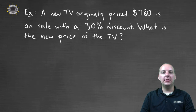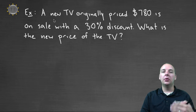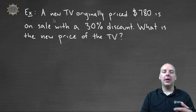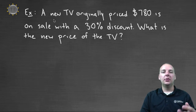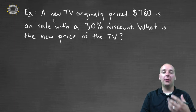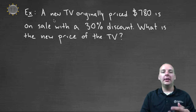Let's look at one example to illustrate this. A new TV that was originally priced at seven hundred and eighty dollars is on sale. When things go on sale they go down in price, so this sounds like a discount — on sale with a thirty percent discount. So we can take off thirty percent of the original price. What is the new price of the TV?